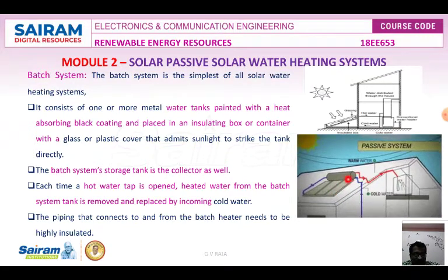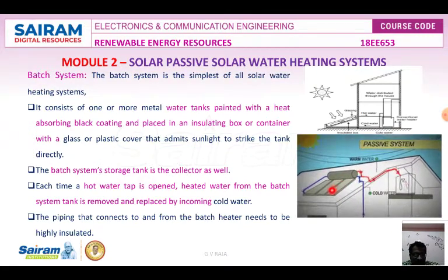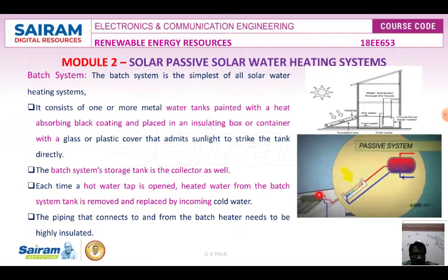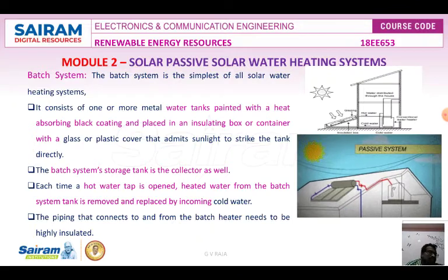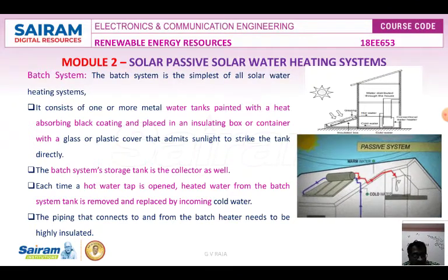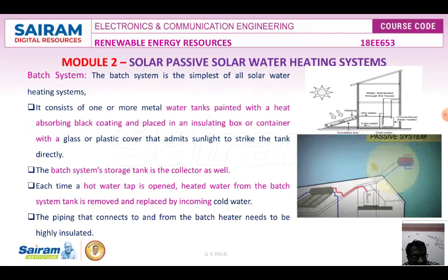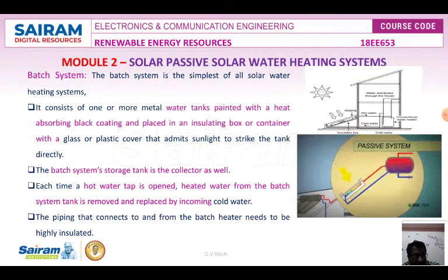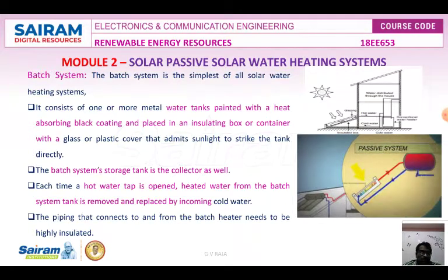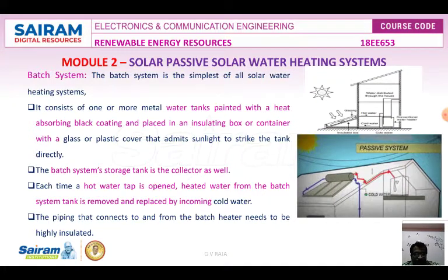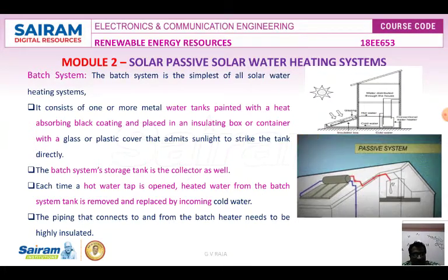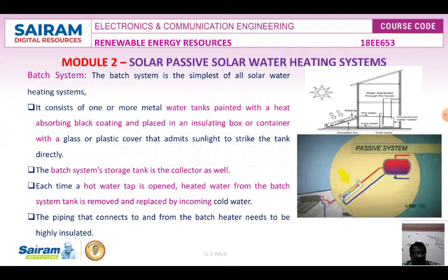Water is passing through these tubes. Whenever solar energy is present, the water gets heated. The red line indicates heated water and the blue line indicates cooling water. The cooling water enters into the storage tank and is circulated through the evacuated solar collectors.